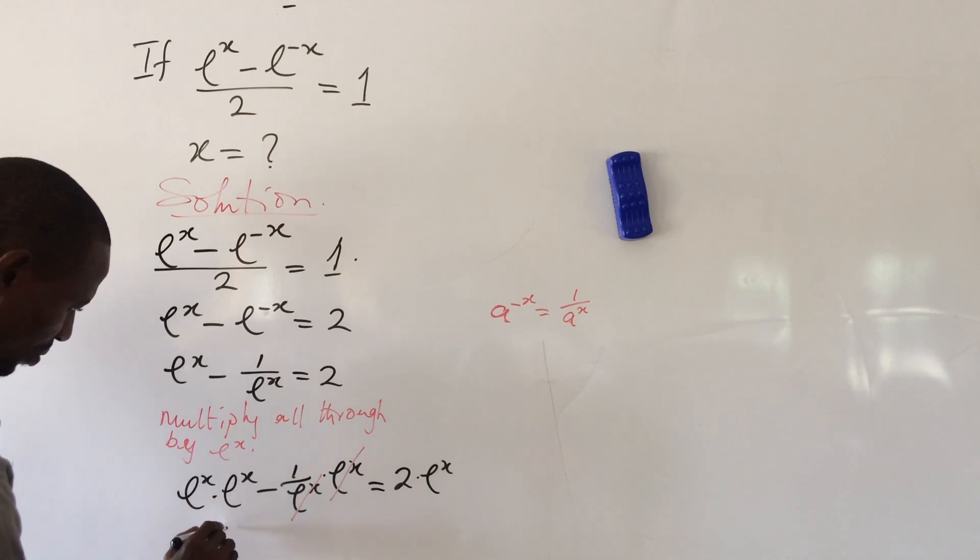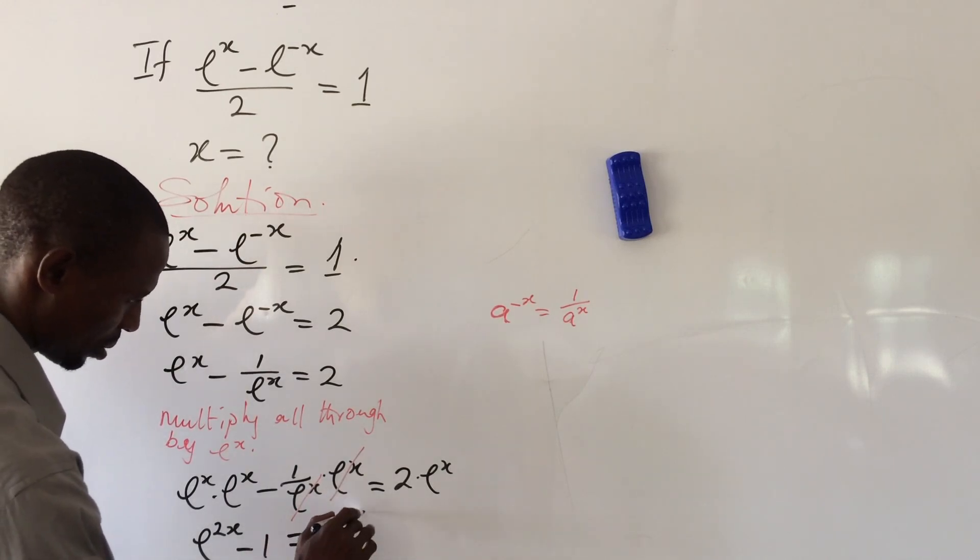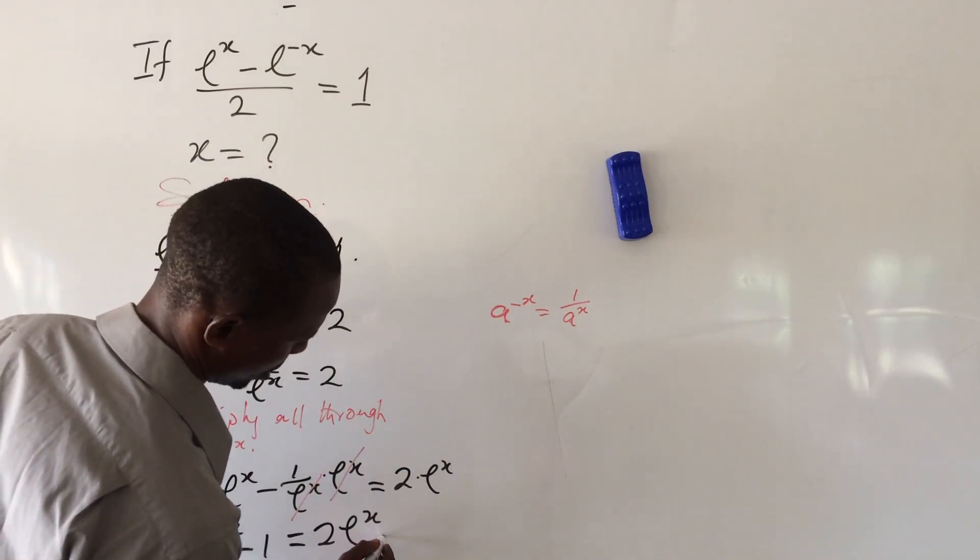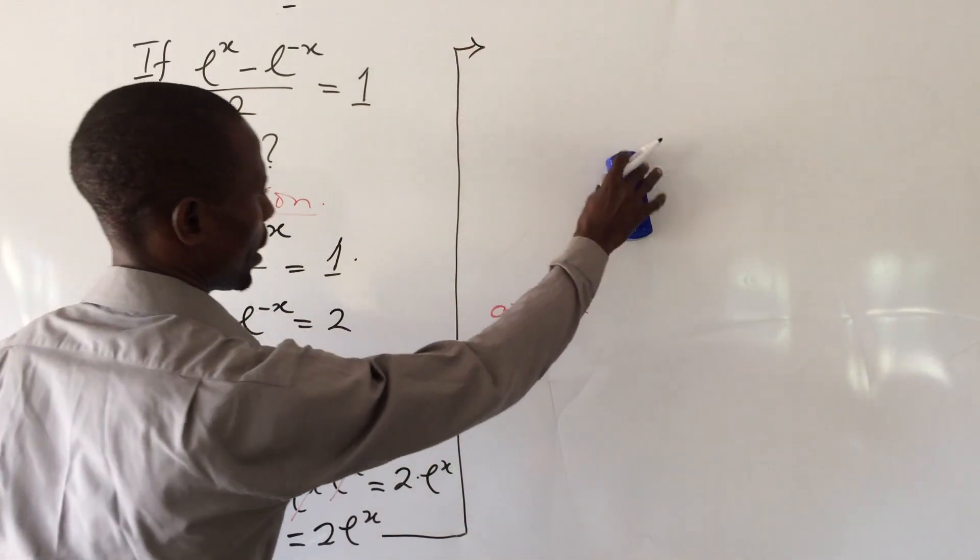This will eliminate, and if we collect our items, we're going to have e^x squared equals 2e^x plus 1. Let's proceed from here.